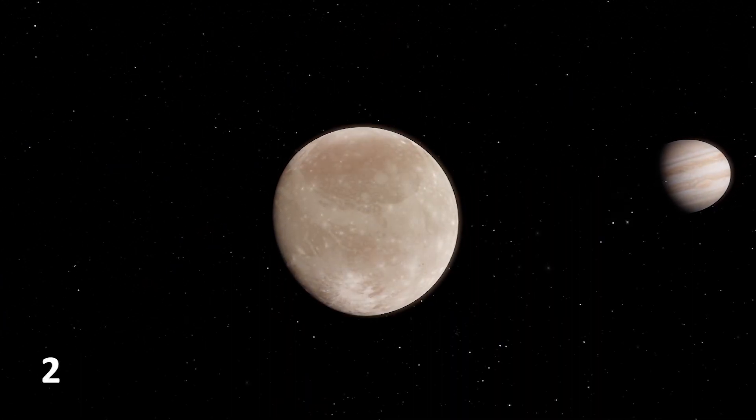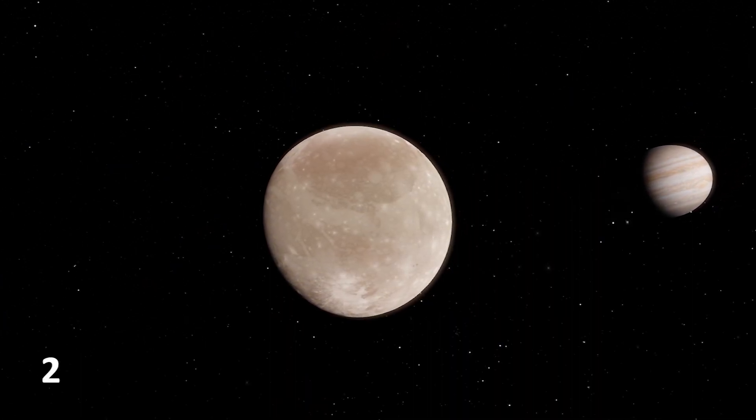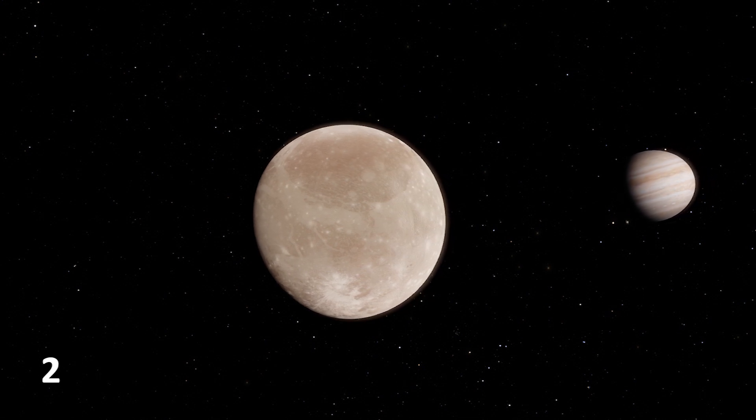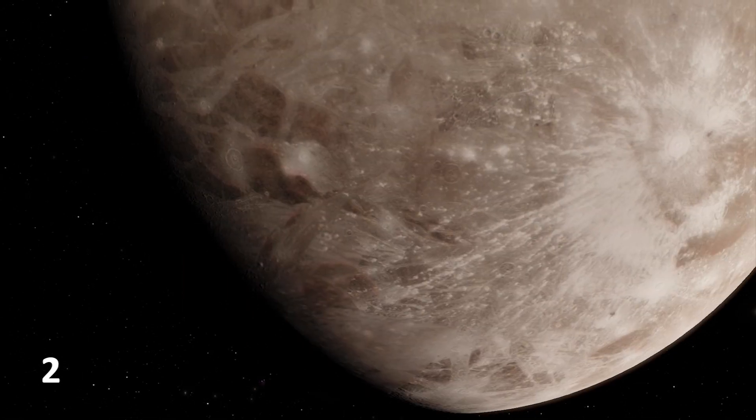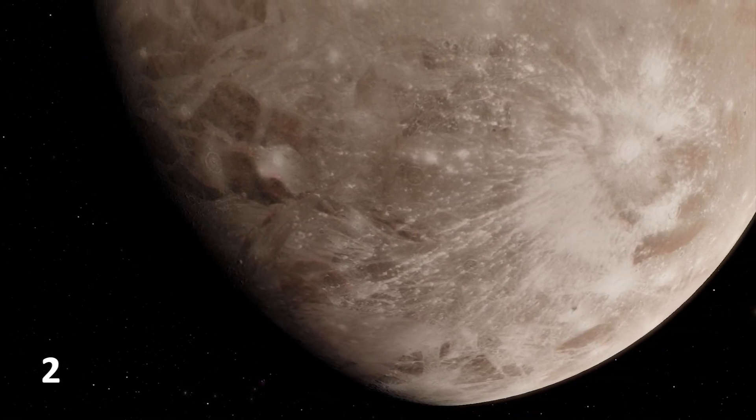The largest Moon in our solar system is Jupiter's Moon Ganymede with a diameter of 5,268 kilometers. The Jovian Moon is larger than Mercury.